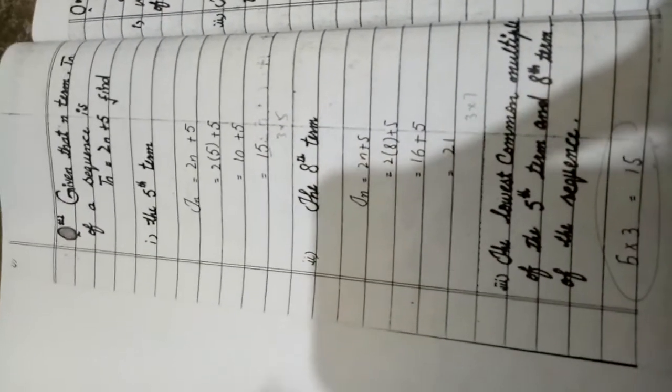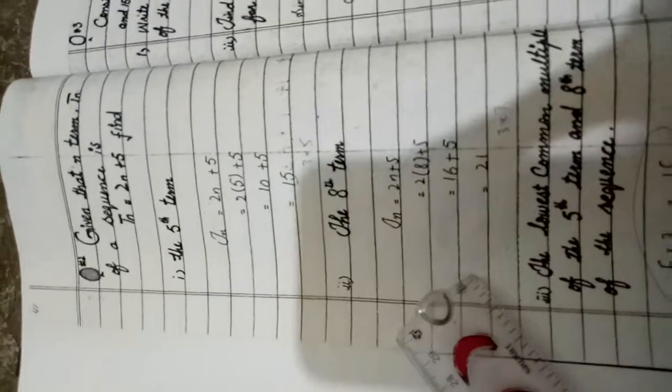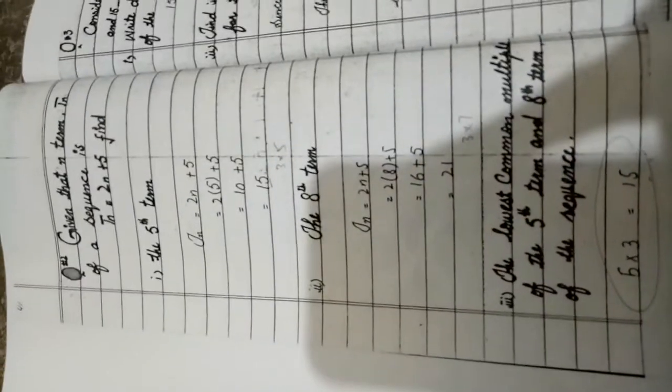Part 3: find the lowest common multiple of the fifth and eighth terms. To find the LCM of 15 and 21, we factor: 15 equals 3 times 5, and 21 equals 3 times 7. The common factor is 3, with remaining factors 5 and 7. So LCM equals 3 times 5 times 7, which equals 105. Thank you.